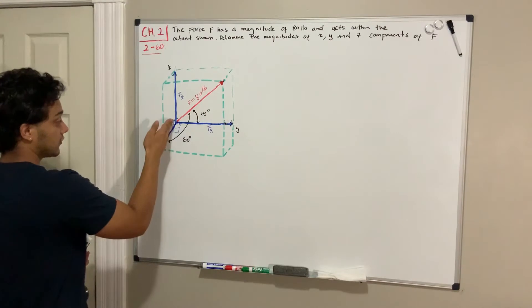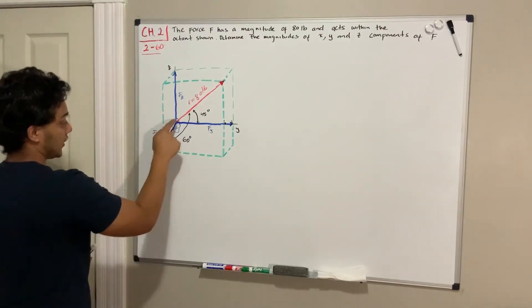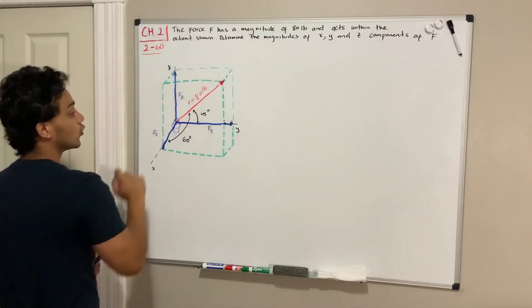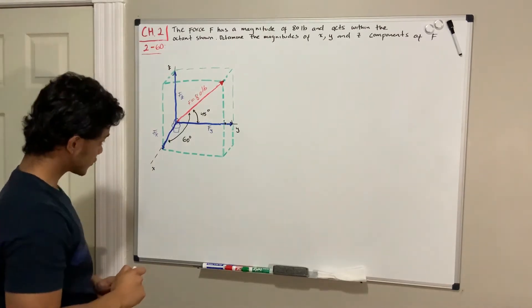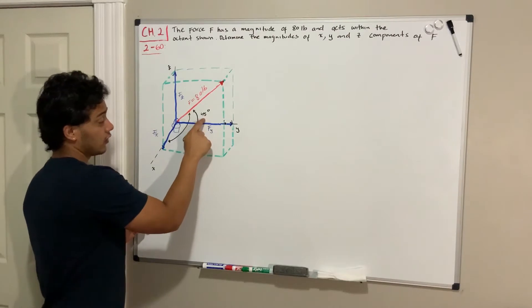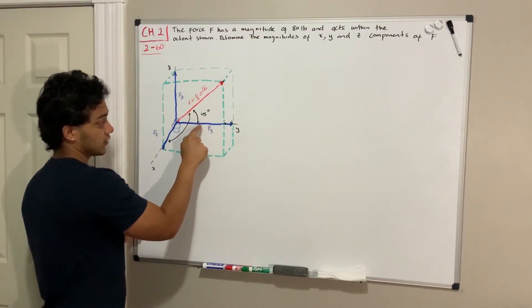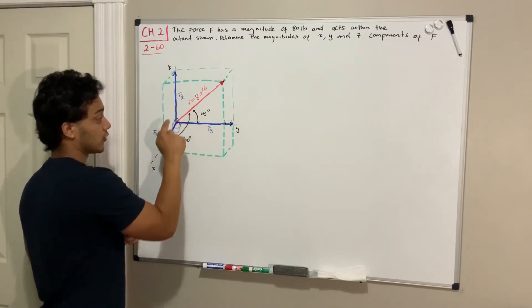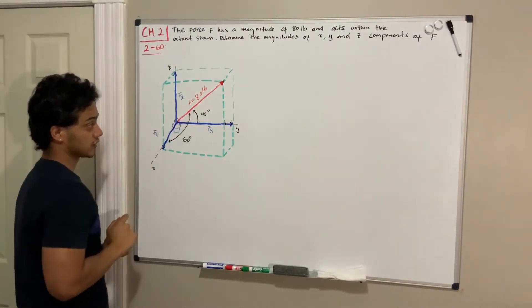We need to find its X, Y, and Z components that are displayed as these blue forces. If we check the picture they're giving us, they're giving us an angle with respect to the y-axis, so from the y-axis to the force and also from the x-axis to the force.